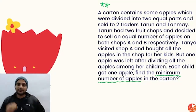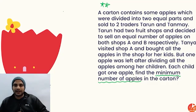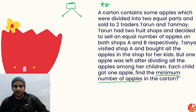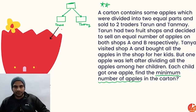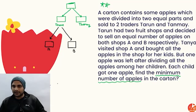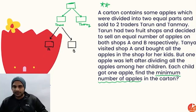Let's work through the solution. The carton has some apples divided equally between Tarun and Tanwa. Tarun then divides his share equally between shop A and shop B. Tanya buys all apples from shop A and distributes them among her children, but one apple is left over. Let the number of Tanya's children be x.